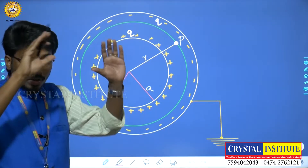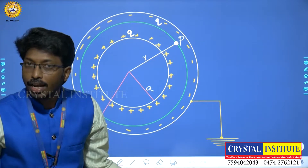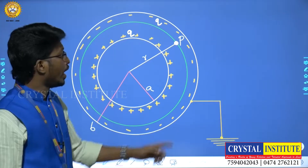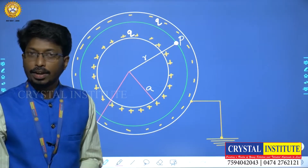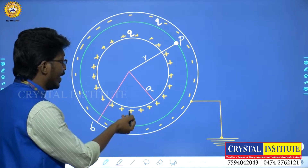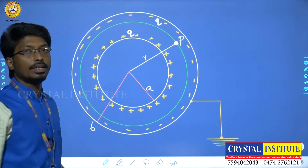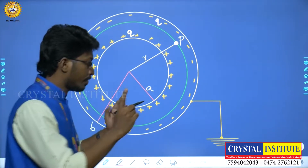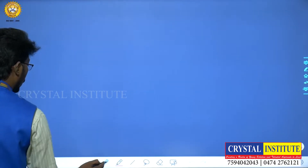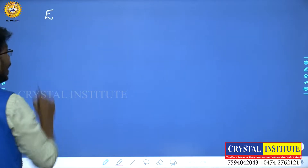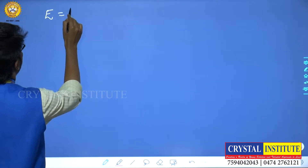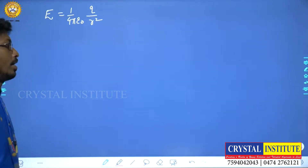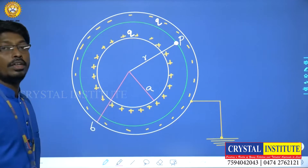This green-colored Gaussian surface encloses the charge Q. The minus Q charge is on the outer shell, outside the Gaussian surface. The inner shell has radius A and the outer shell has radius B. The electric field at point P, due to the inner shell's charge Q, is given by: E = (1 / 4πε₀) × (Q / r²).